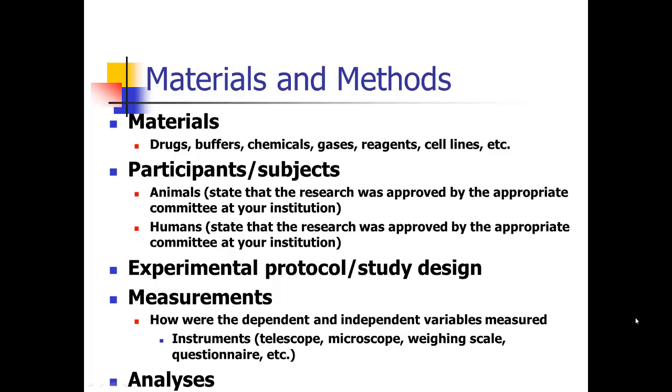So what do you need in your materials and methods sections? Well, you need to tell about the materials: things like drugs, buffers, chemicals, gases, reagents, cell lines. You need to give specifics like pH, temperature, ingredients, doses, all of those things.